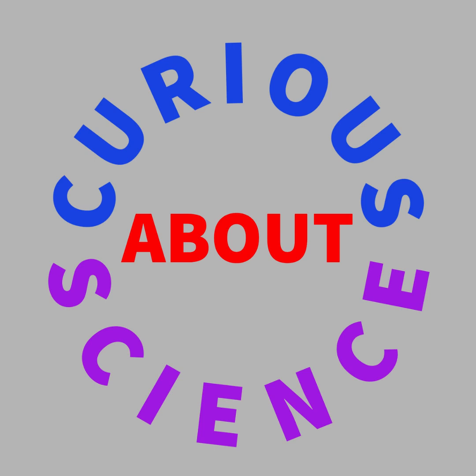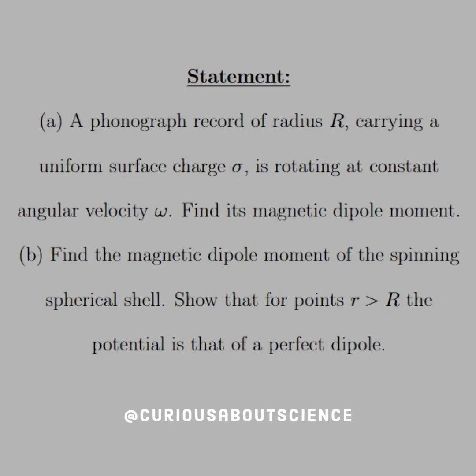Sure hope you didn't think we were done with these dipoles yet. The statement reads, for part A, a phonograph record of radius R carrying a uniform surface charge sigma is rotating at constant angular velocity omega. Find its magnetic dipole moment.